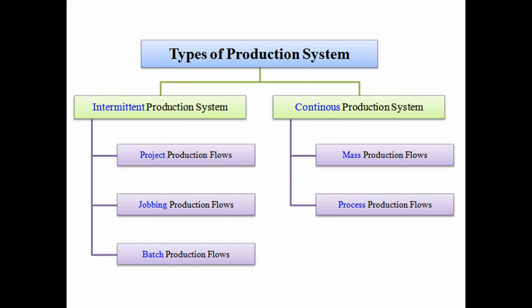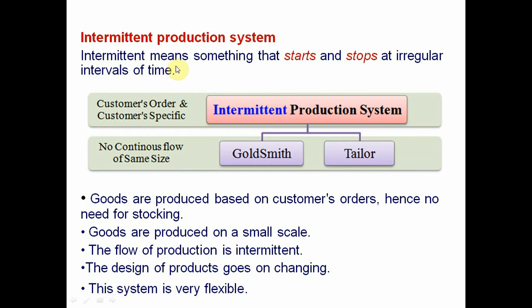Project and job production are the most important topics here. Intermediate means something that starts and stops at irregular intervals of time. It is customer order and customer specific. For example, a goldsmith and a tailor — it is a non-continuous flow. The goldsmith produces with the required dimensions, and the tailor produces as per the customer's required sizes. Goods are produced based on customer orders.